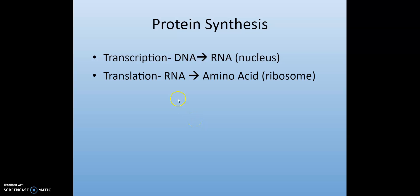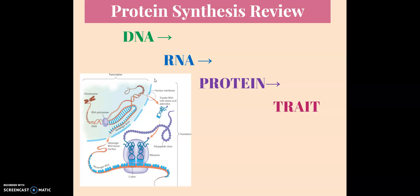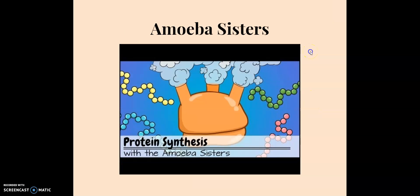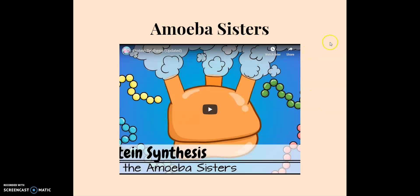So once again, protein synthesis: transcription goes from DNA to RNA in the nucleus, while translation goes from RNA to amino acids on the ribosome. And just a big overview: DNA goes to RNA, which goes to protein, which then expresses the trait because those proteins are made. Now you're going to move on into the next module to watch the amoeba sisters video.